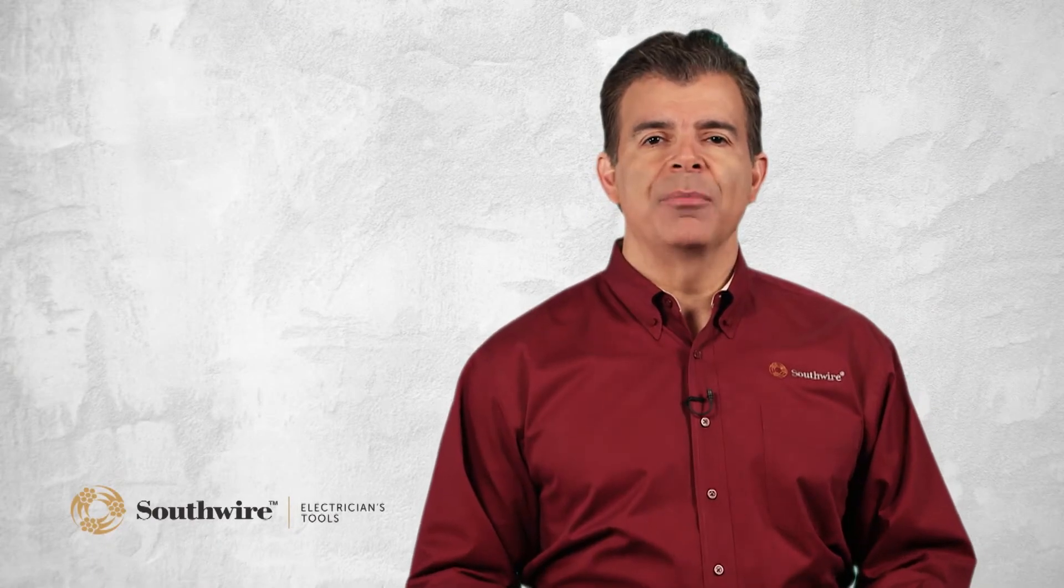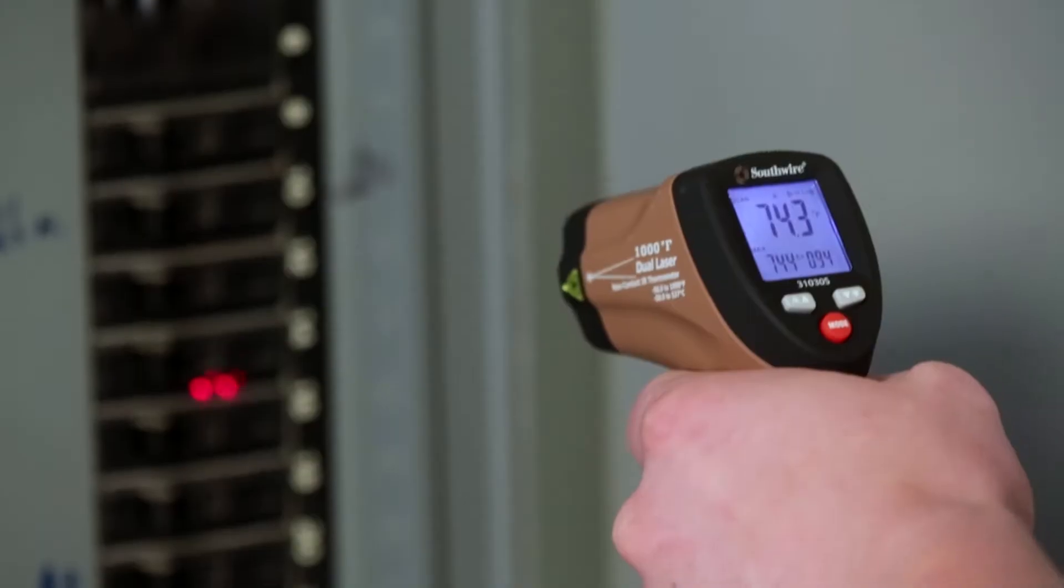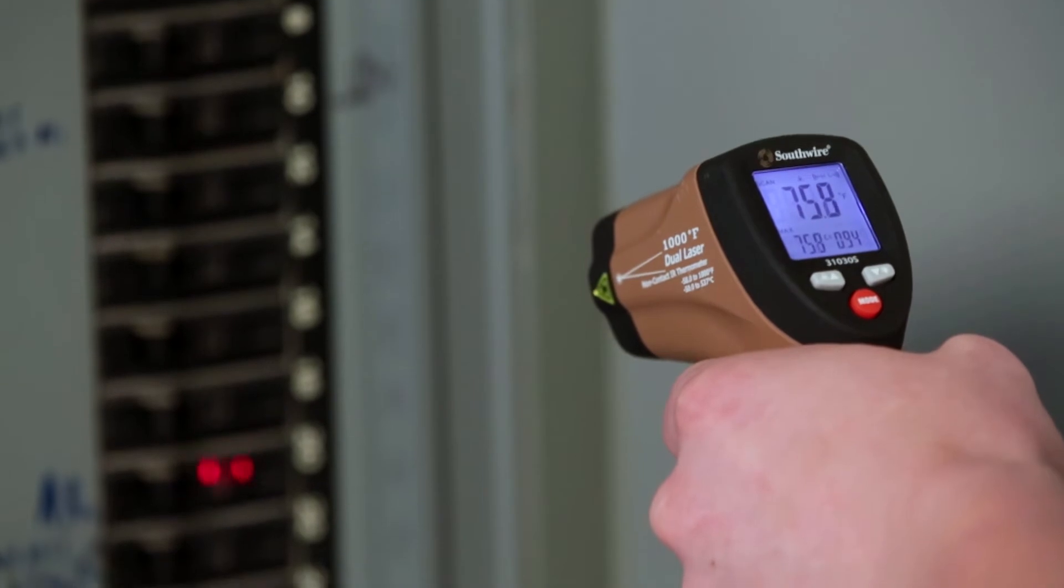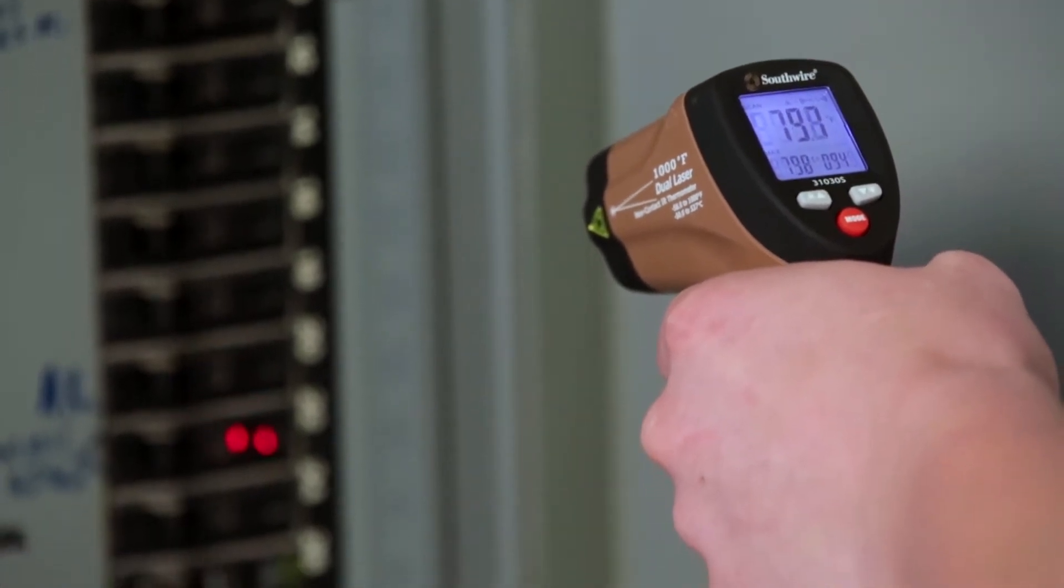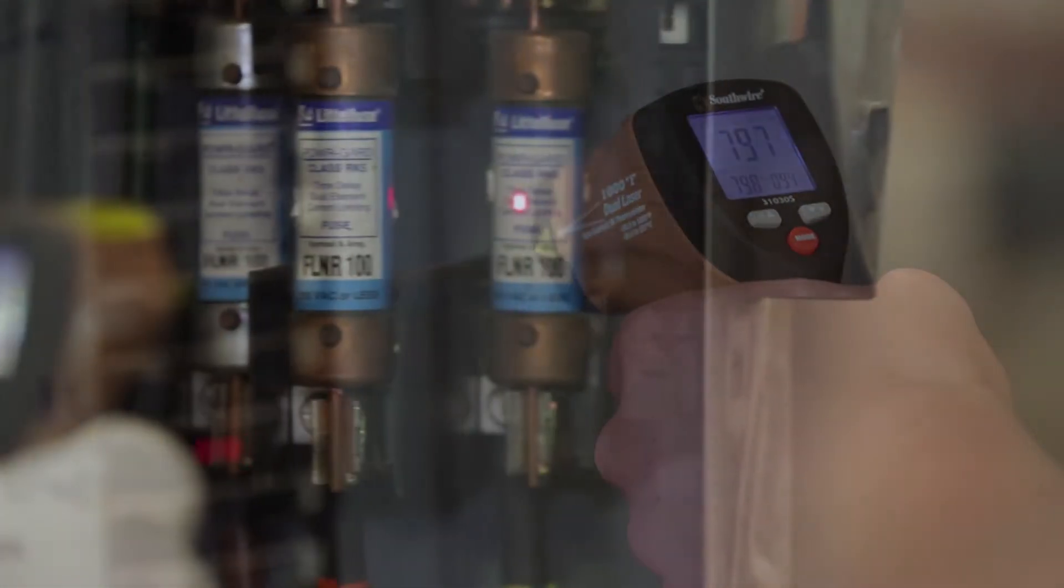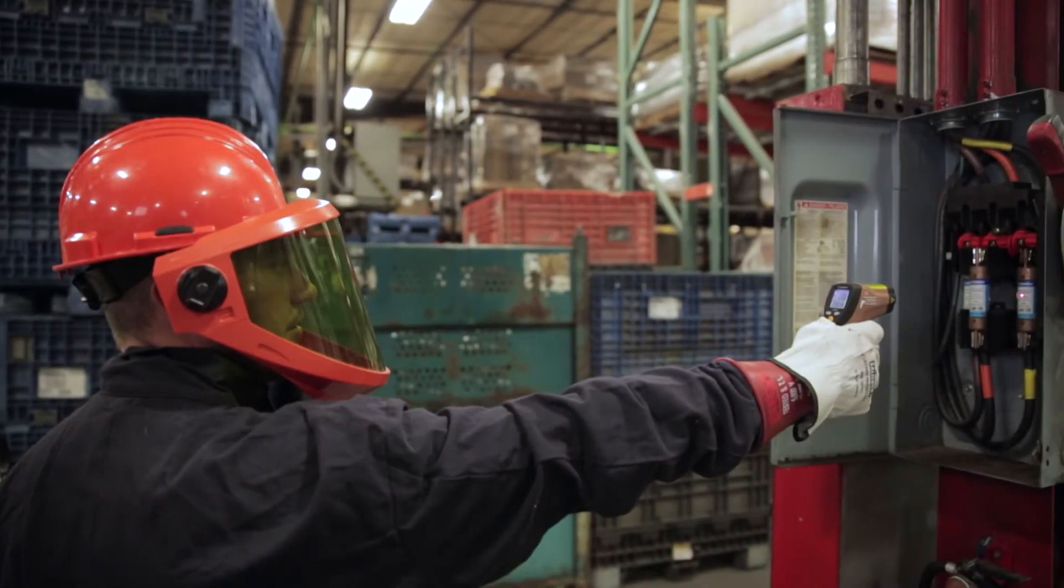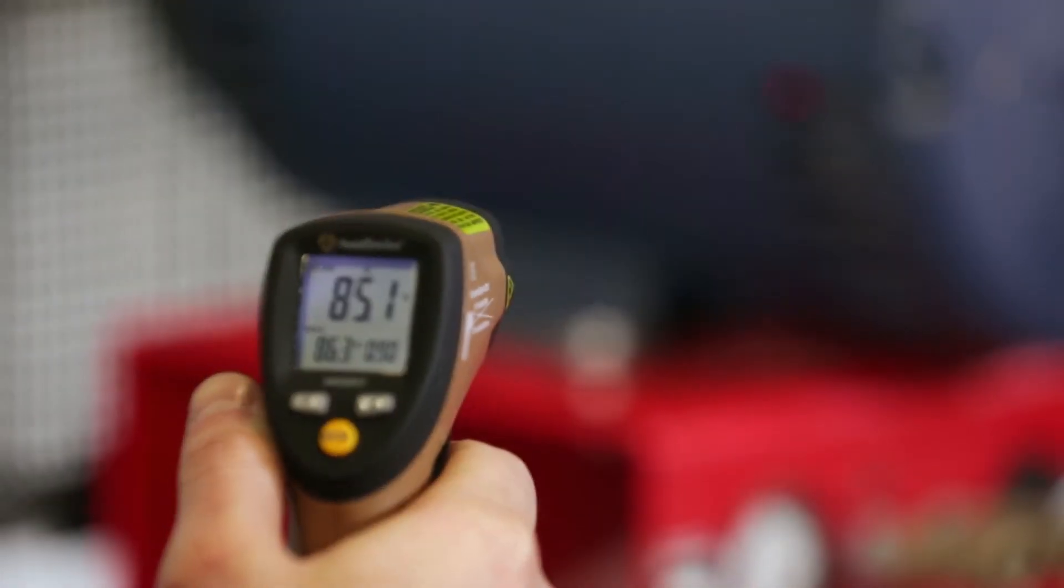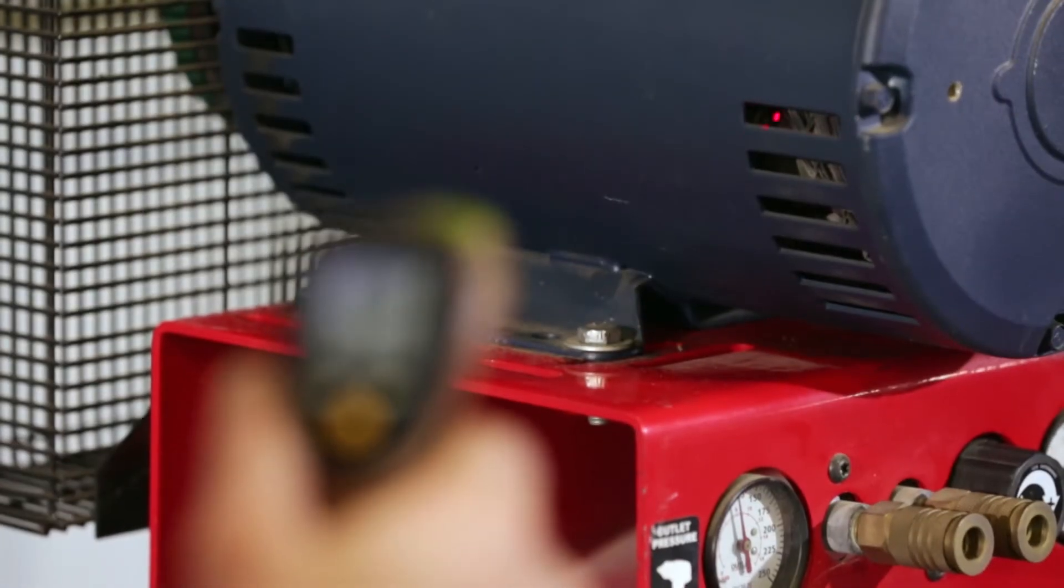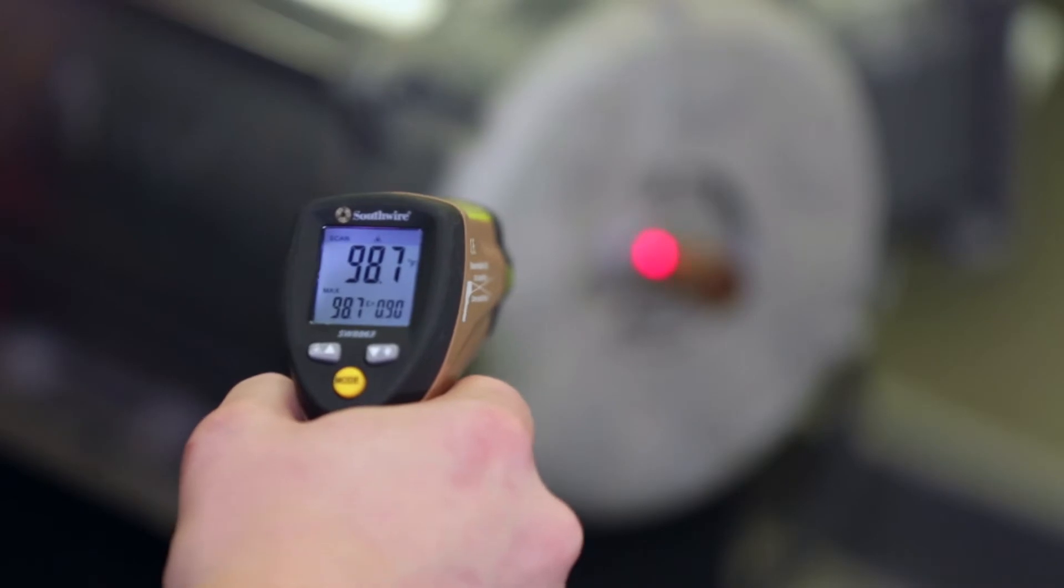Applications for IR thermometers are endless. They can be used to find hot spots in electrical panels caused by loose or corroded connections, locate fuses, circuit breakers, transformers, and other electrical devices that may be overloaded, check motors for overheating, and detect worn bearings and find all sorts of mechanical faults due to excess friction.